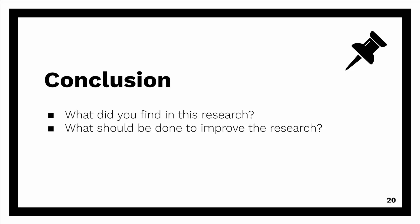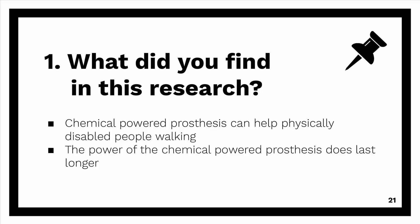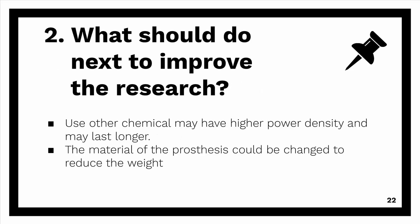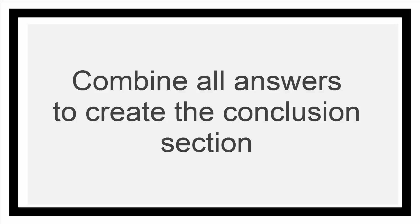In the conclusion, you need to answer two questions: What did you find in this research? And what should be done to improve the research? In my case, I wrote down: chemical powered prosthesis can help physically disabled people walk, and the power of the chemical powered prosthesis lasts longer. For improvements, I wrote: using other chemicals may provide higher power density and may last longer, and the material of the prosthesis could be changed to reduce the weight of the robotic leg. Then you need to combine all the answers in this section together — I'm going to leave that for you, because it is a very simple task.